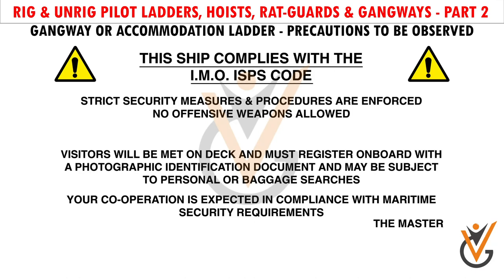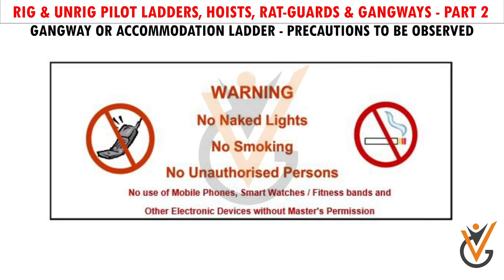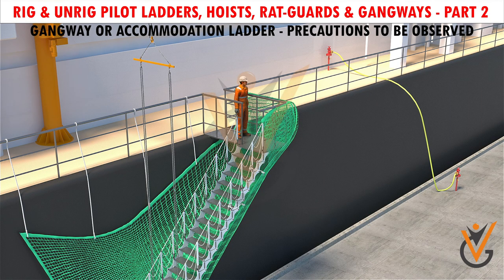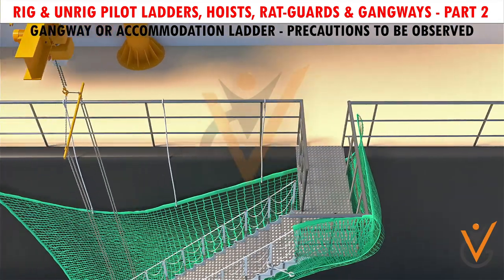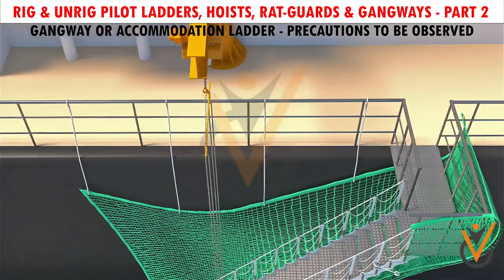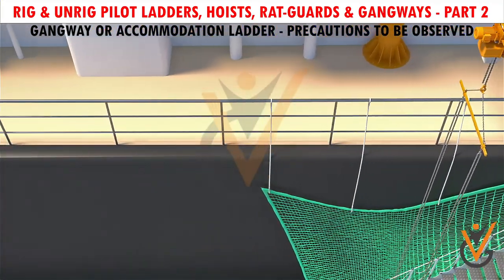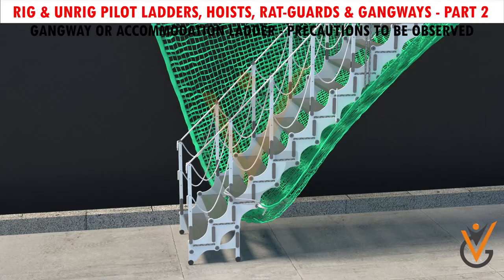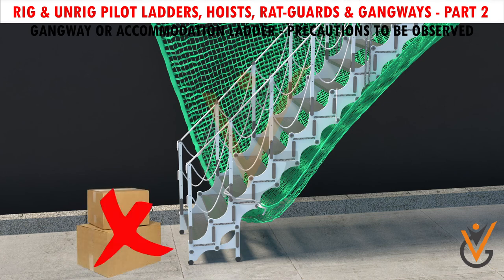9. Notice board should be placed at the gangway. 10. A responsible person should be at the gangway attending gangway watch. 11. Passage on the deck adjacent to the gangway should be clean and not slippery. 12. The lower platform should be resting on the jetty, and there should be no obstruction close to the lower platform on the jetty.